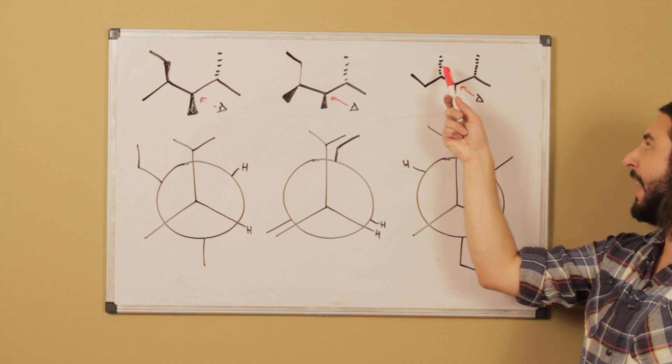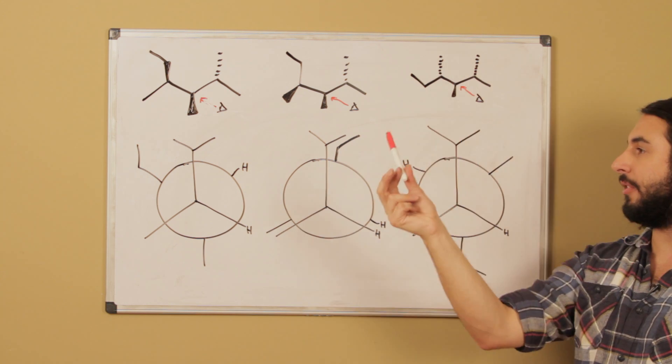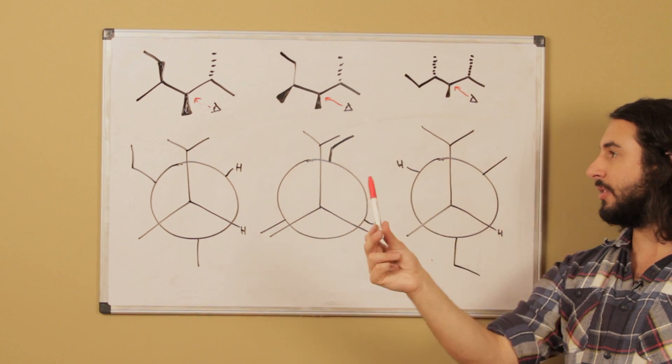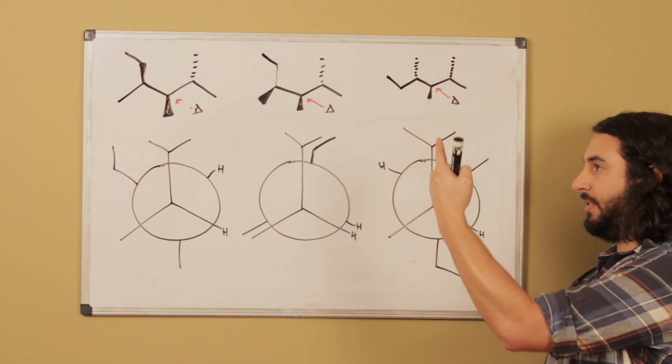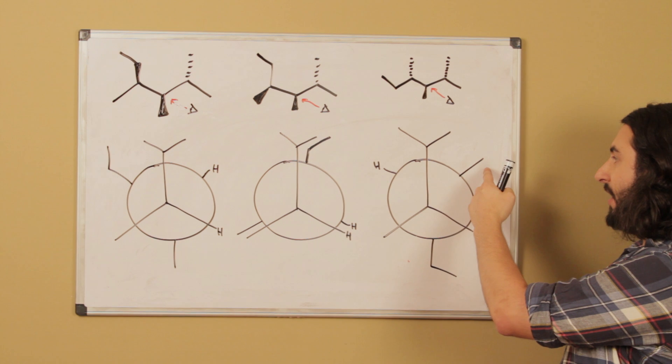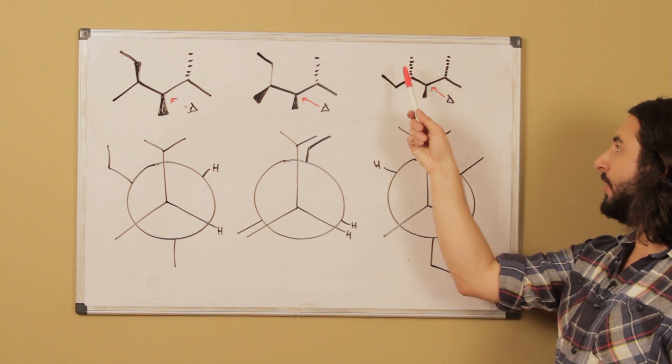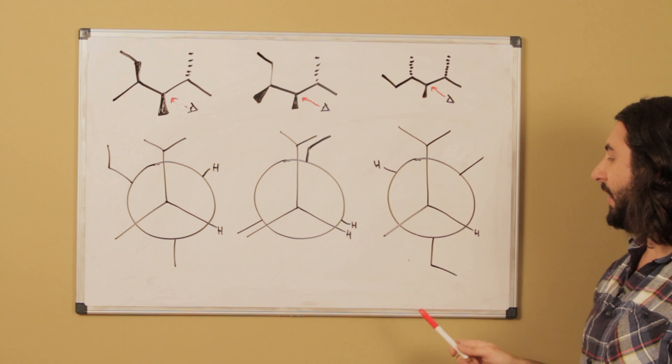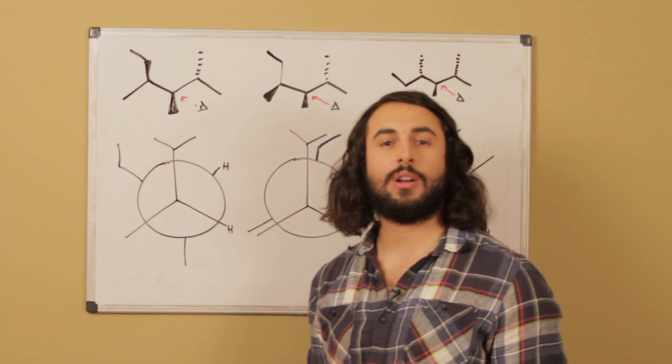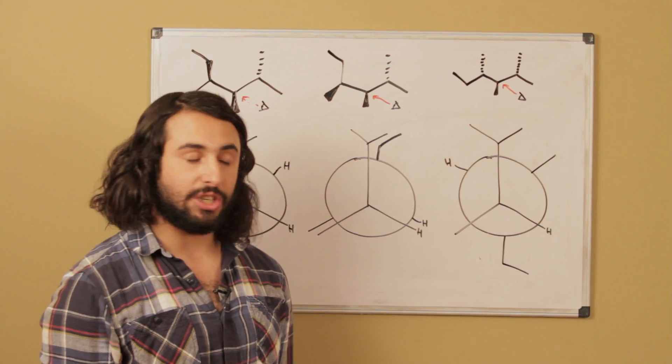And then for this last one, we've got the dash methyl that's past the board, that's going to be up and to our right, because it's on this side of the board, so that's over there. The implied hydrogen is up and to the left, and then that ethyl group is straight down. So let's talk about the discrepancy and energy of these.